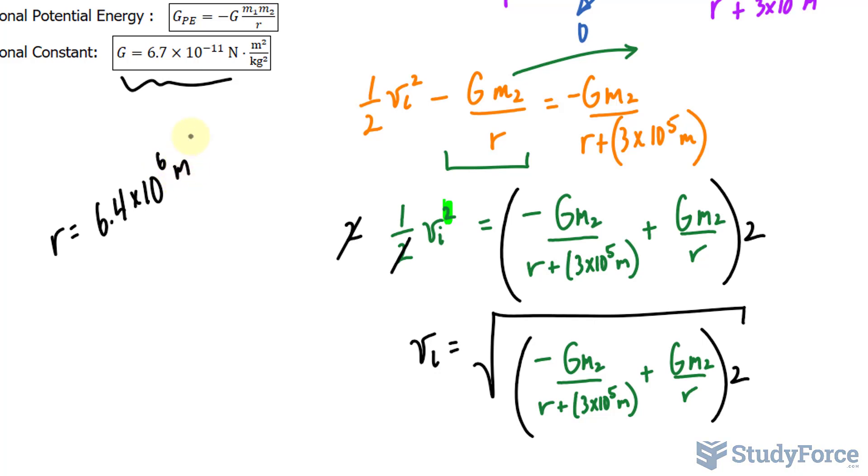And the units, of course, are in meters. So we have capital G, we have r. The mass of the Earth is 6.0 times 10 to the power of 24 kilograms.